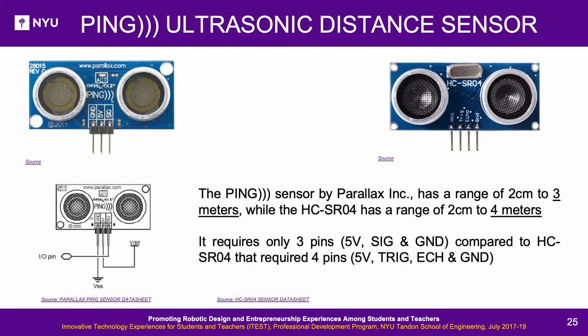Ping ultrasonic distance sensor: the sensor choice depends on requirements. If only one I/O pin is available — due to many other sensors and actuators interfaced with the microcontroller — the Ping sensor by Parallax is the obvious choice. If higher range of detection is required, the HCSR04 is better. Other factors such as voltage and current requirements, and the microcontroller's current limit per I/O pin, are also important considerations.